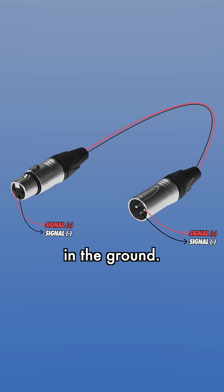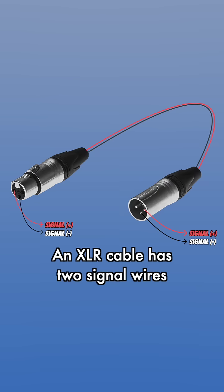Rather than a signal conductor and a ground, an XLR cable has two signal wires and a shield.